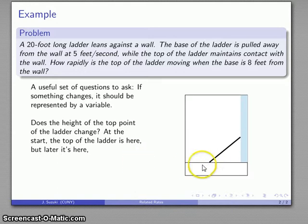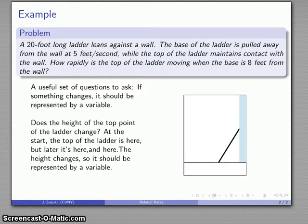I'm going to pull that a little bit further away. I'm going to give it another pull. I'm going to pull it away a little further. And so notice that the top of the ladder was up here, but it's dropped down to here, which means that the height changes so it should be represented by a variable.